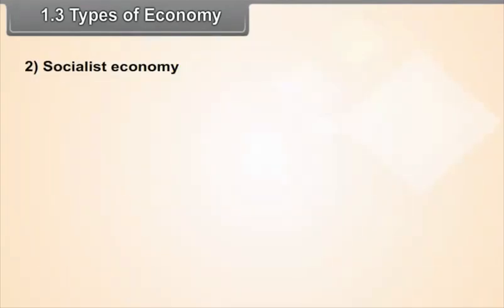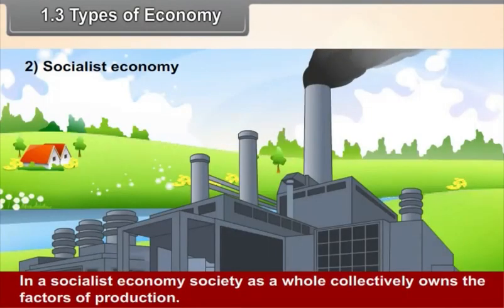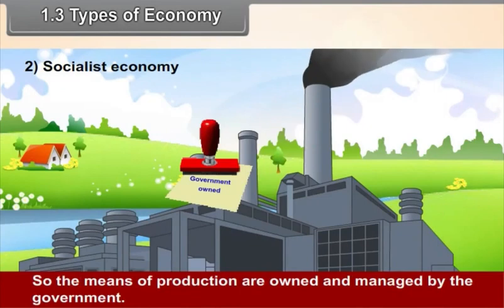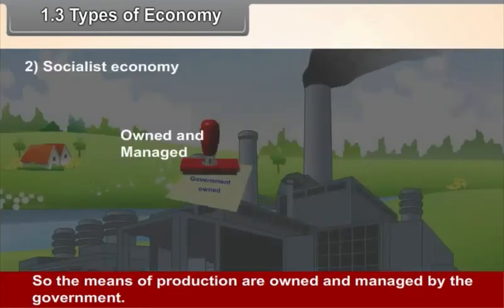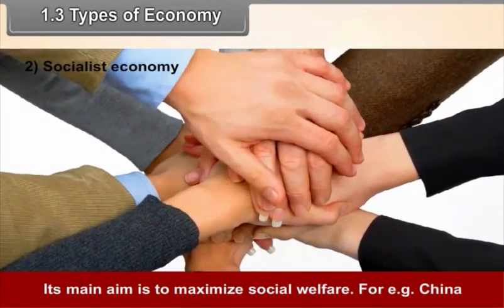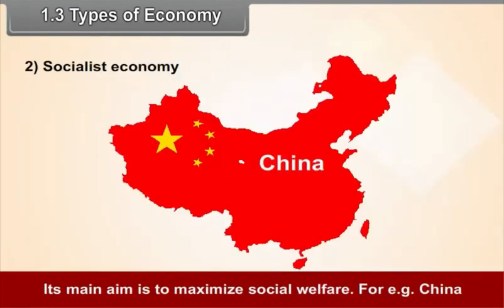2. Socialist Economy. In a socialist economy, society as a whole collectively owns the factors of production. So the means of production are owned and managed by the government. Its main aim is to maximize social welfare. For example, China.